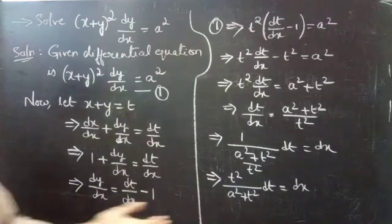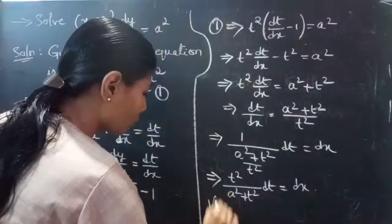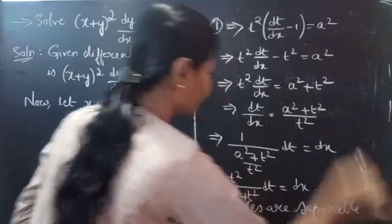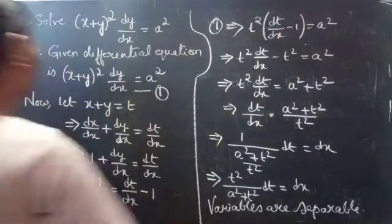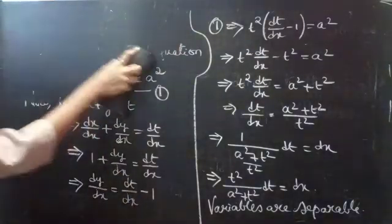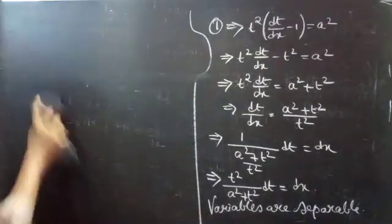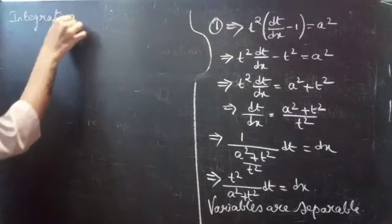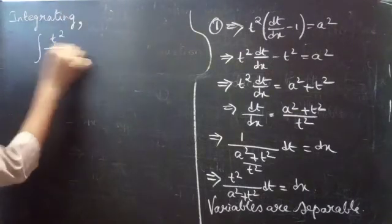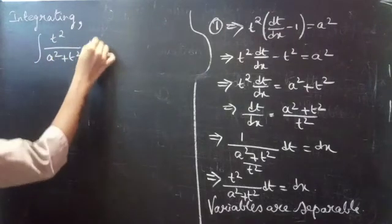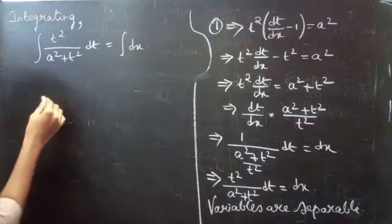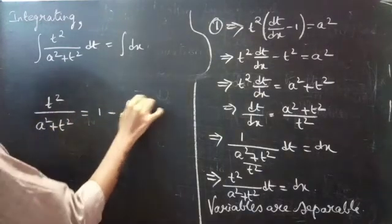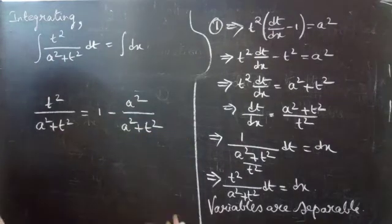So now we can write it as t²/(a² + t²) · dt = dx. This is now of the form variable separable. So we integrate both sides: ∫ t²/(a² + t²) dt = ∫ dx. The expression t²/(a² + t²) can be written as 1 − a²/(a² + t²).